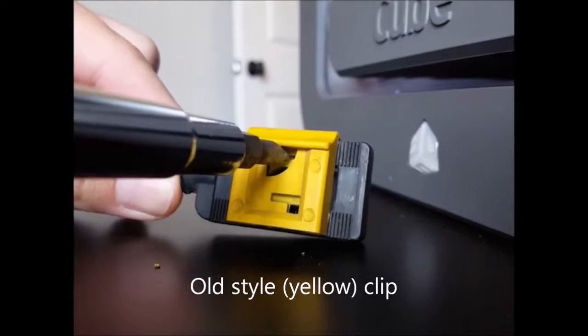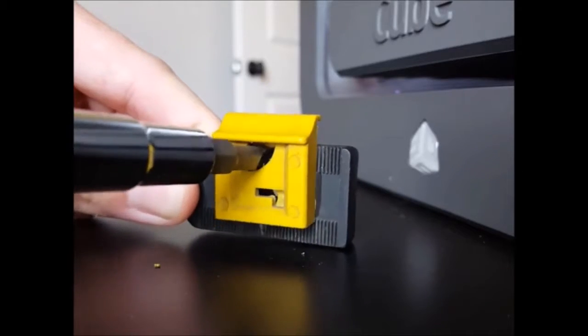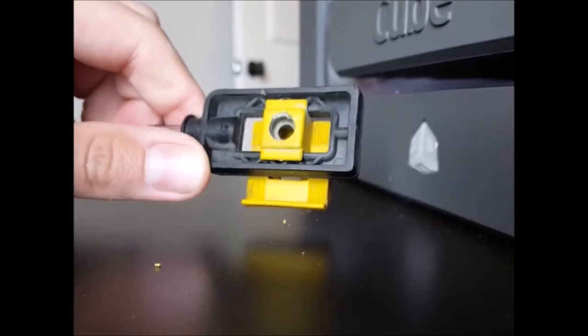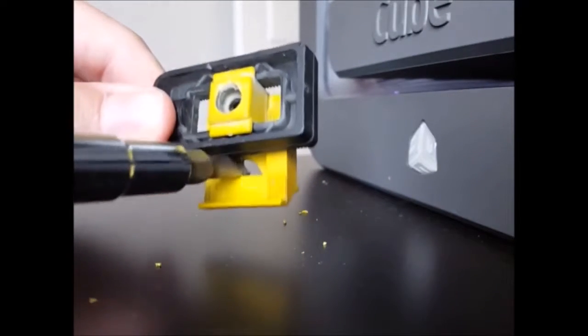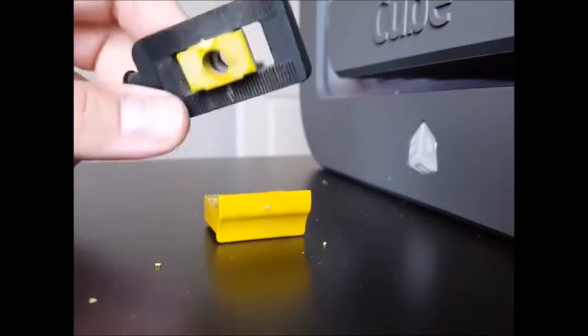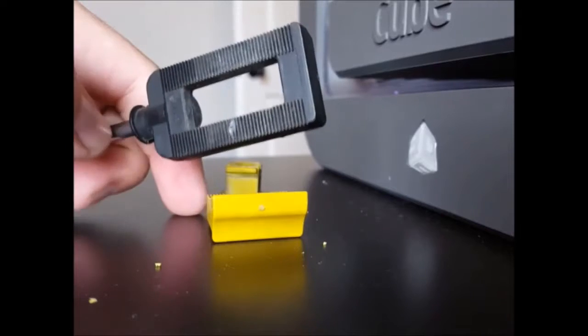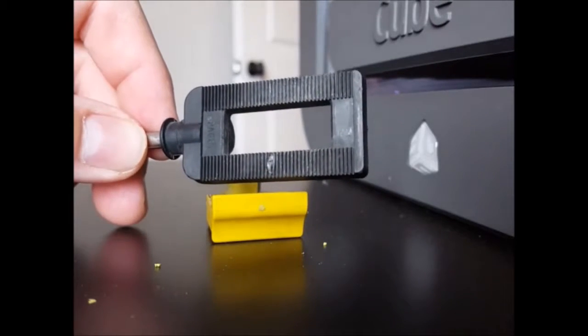If you've got the old-style yellow clip, take a flathead screwdriver and put it in the slot and twist to get the clip up. If you've got it up far enough, you can flip it over and pry it off the rest of the way.